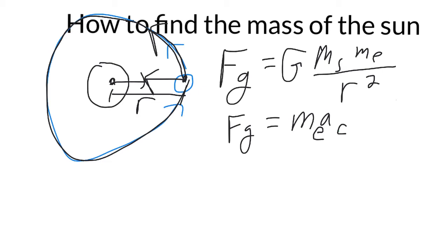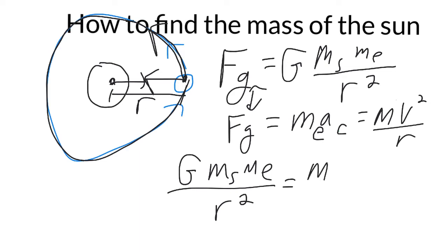Then we just set these two things equal to each other. We're going to have big G mass of Sun mass of Earth divided by the distance between them, that's equal to ma. Now remember the acceleration, centripetal acceleration, is equal to v squared over R. So let's write that in: that's the mass of Earth times the velocity, the velocity of Earth, how fast it's moving going around the Sun.